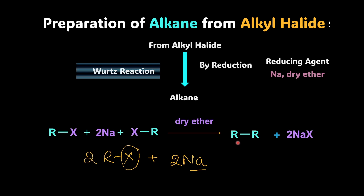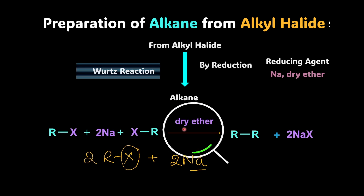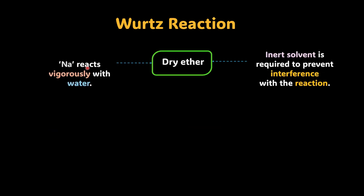One interesting thing to observe here is this term 'dry.' Why do we use dry ether? The reason is, number one, sodium reacts vigorously with water. So even if there is a little drop of water, that is going to be dangerous — we do not want a blast in our labs. So we make use of dry ether. Dry ether helps in providing an inert environment; it's an inert solvent which prevents interference with the reaction.